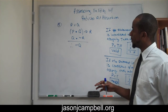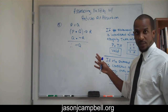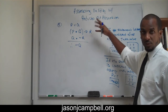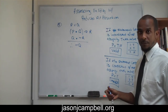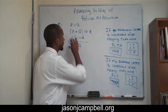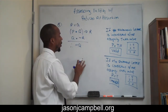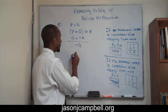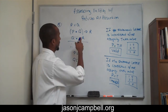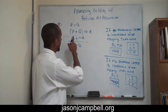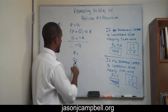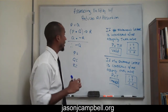So, last problem. We're attempting to assess the validity using reductio. We've gone through four arguments. This will be the final argument. Step one: assign and write out all of my statement letters. We have P, Q, and R. So we have three statement letters.